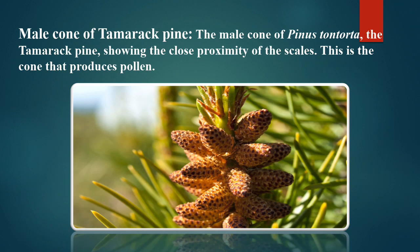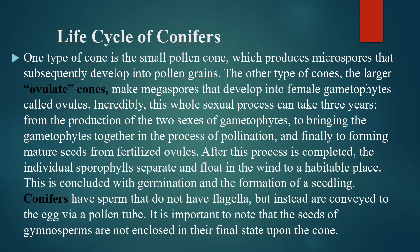Male cone of pines: you can see here in the diagram the male cone of pines, which will produce pollen at maturity. Life cycle of conifers: one type of cone is the small pollen cones, which produce microspores that subsequently develop into pollen grains. The other, larger type is the ovulate cone, which makes megaspores that develop into the female gametophyte.